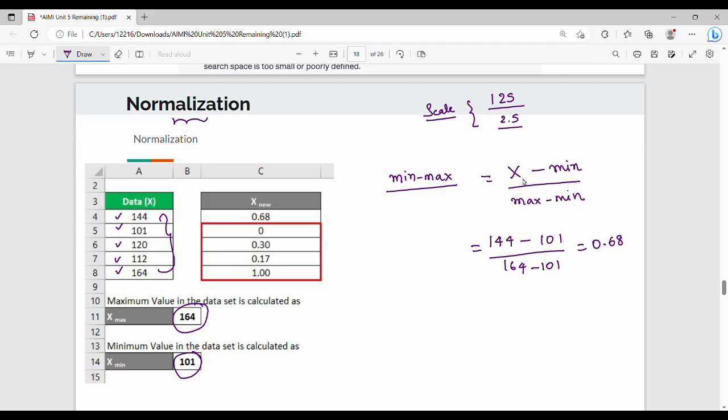The same way, we will calculate for 164. What is the value of 164? 164 minus 101 divided by 164 minus 101. If you simplify it, it will be 1. With Min Max Normalization, the values are converted to a range of 0 to 1. That is normalization.